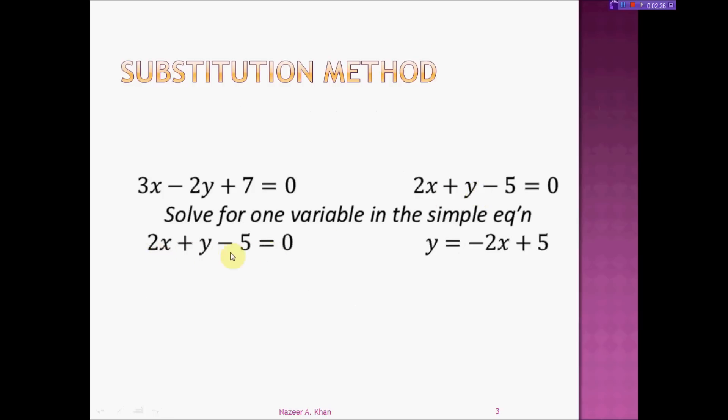To isolate y on the left-hand side, I have to take these two terms to the other side. When we take a term over an equal sign we change the sign, so when we have 2x, we're going to take it over to the other side and it becomes -2x, and -5 becomes +5. So I have isolated y by itself: y = -2x + 5.